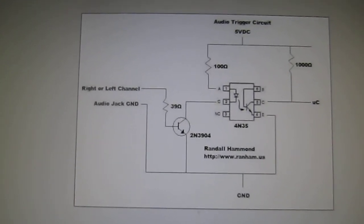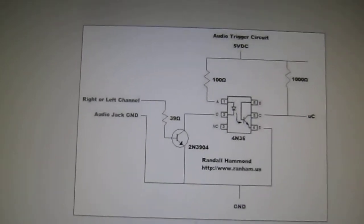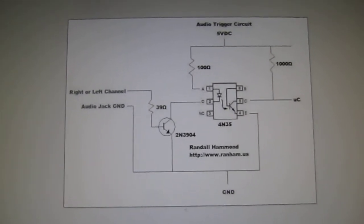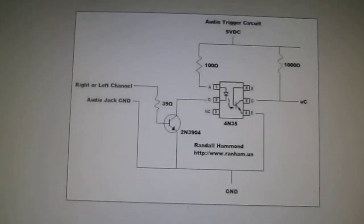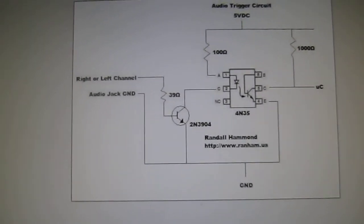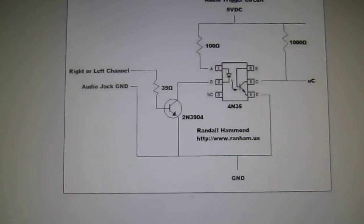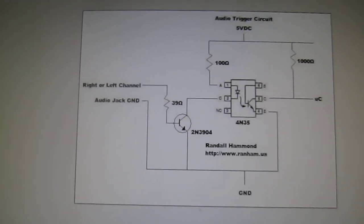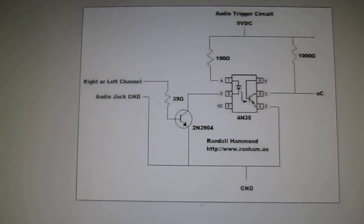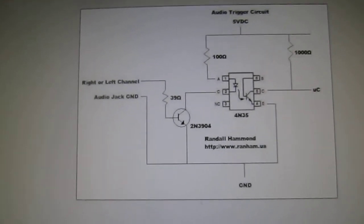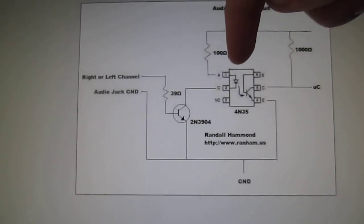And I forget what the milliwatts was or what the calculation I used. But so far, it appears that it hasn't damaged my iPod. But results are not guaranteed. So 39 ohm resistor to the base of the NPN transistor. And that transistor is switching on and off the LED inside the opto-isolator. So it switches this LED.